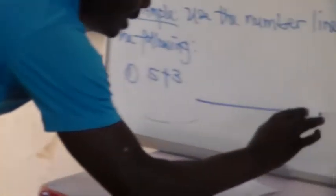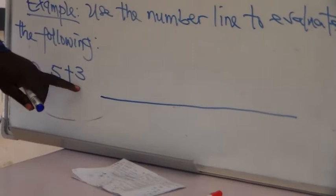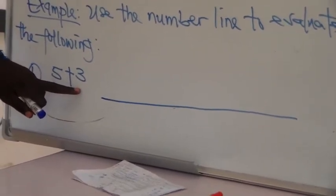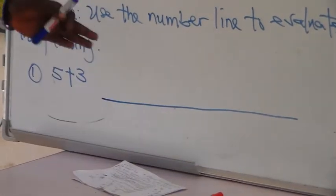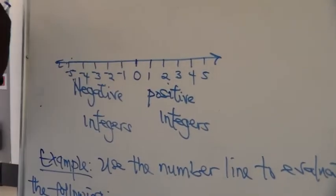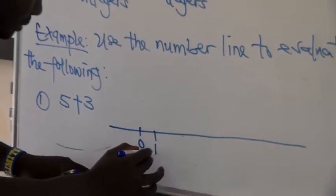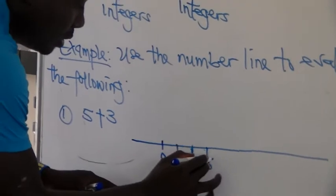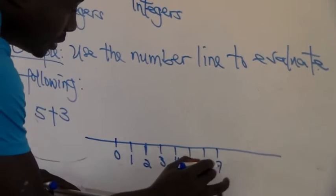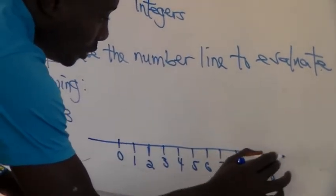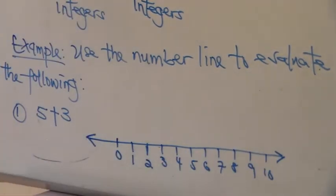Ordinarily, five plus three is simply eight. But if the question says we should use the number line and you decide to just put the answer down, you'll be getting it wrong. So we have to use the number line to get the answer. You pick your long ruler and draw your number line. If you look at the two numbers, both numbers are positive integers. Since both numbers are positive integers, we are not going to need the zero and negative part of the number line. So I can put this starting from zero, then one, two, three, four, five, six, seven, eight, nine, ten, and so on. The arrow comes in at the end — if the arrow is not there, it's not complete.